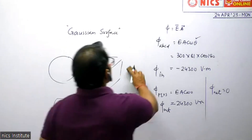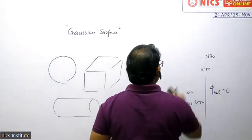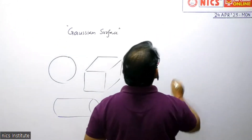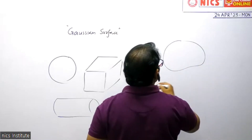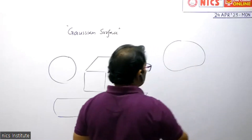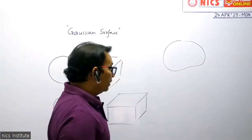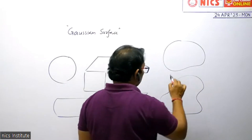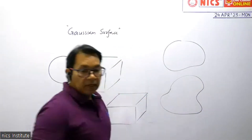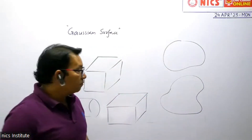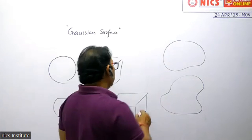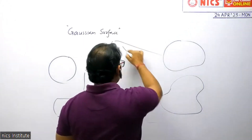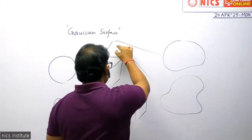A surface of a potato, papaya, pumpkin — all these are Gaussian surfaces. It could be some irregular surface also, but it should be enclosed. So anything which encloses some volume in it is called a Gaussian surface. These are all examples of Gaussian surfaces.